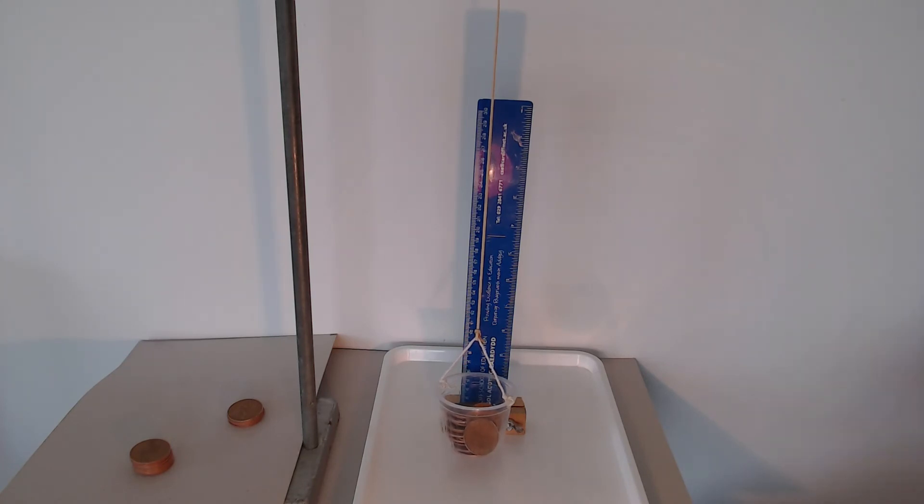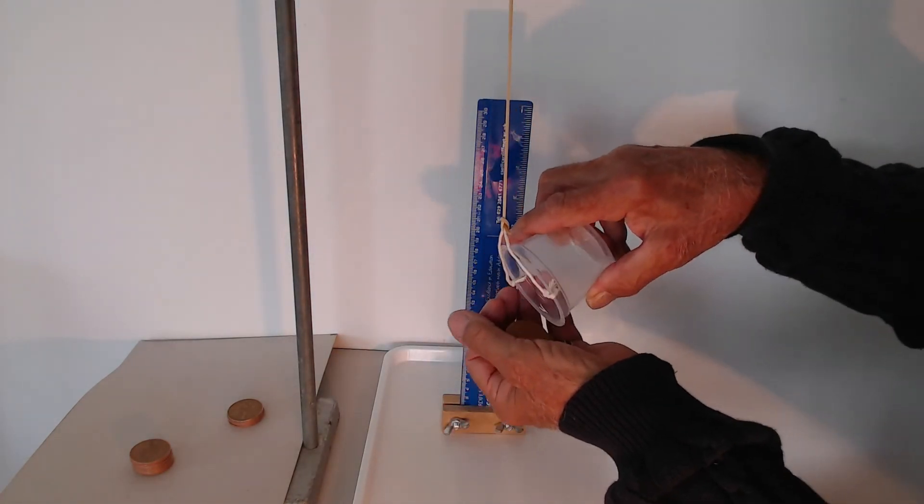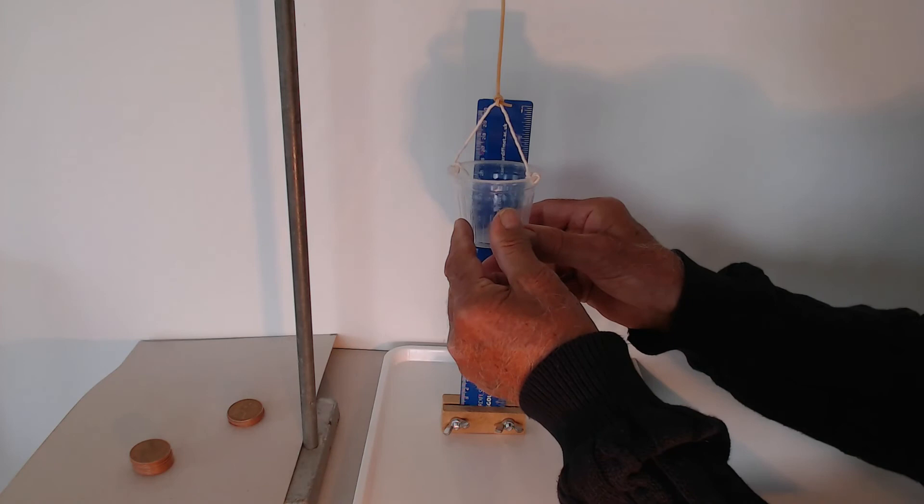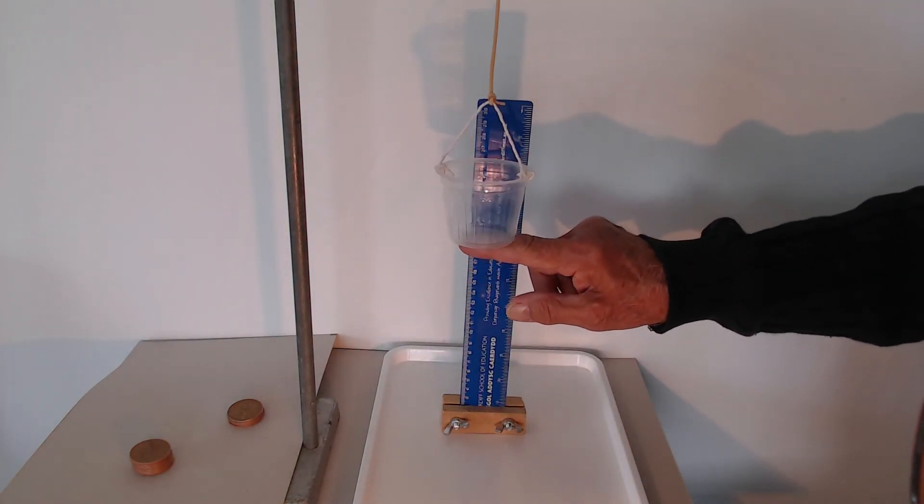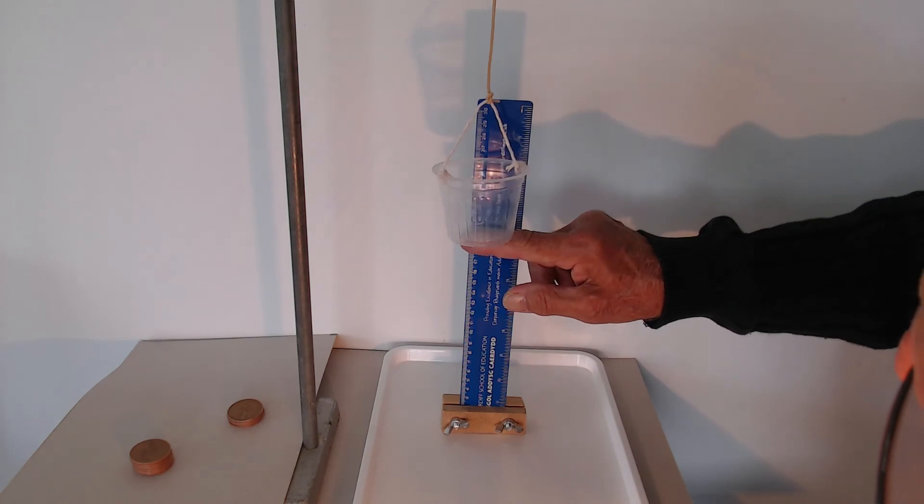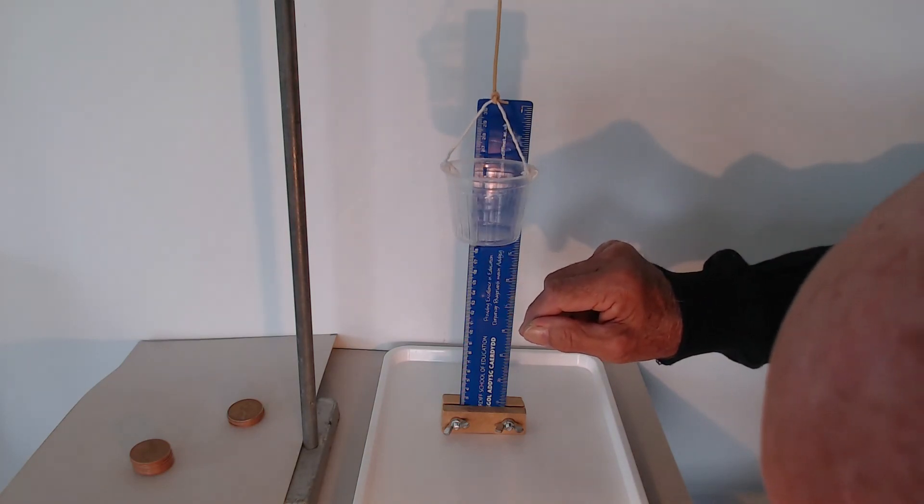Right, we've now got a set of results. Let's just take all the pennies out and there actually were 10 pairs. So we've actually got back after we've removed all the weights to 26.3, which indeed was where we started.